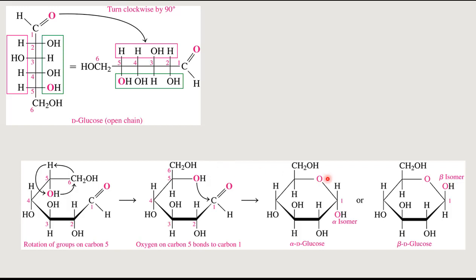As we push electrons around, the hydroxyl oxygen on carbon 5 attacks the carbonyl carbon (carbon 1). We create a single bond between this oxygen and carbon 1, which in turn reduces the carbonyl double bond to a single bond. The hydrogen that was on the hydroxyl moves over to protonate the oxygen. We end up with what you should recognize as a hemiacetal molecule, and carbon 1 becomes our anomeric carbon or hemiacetal carbon.